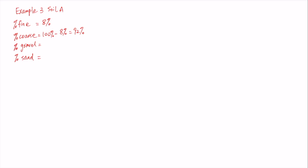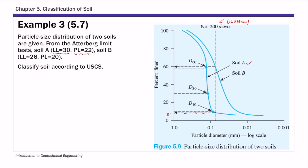For the gravel and sand breakdown in the PSD curve of soil A, the x-axis is particle diameter. In the USCS system, the boundary between gravel and sand is 4.75 millimeters, and the upper limit of gravel is 76.2 millimeters. Between sand and fines is 0.075 millimeters — that's the number 200 sieve. Gravels are particles larger than 4.75 millimeters.